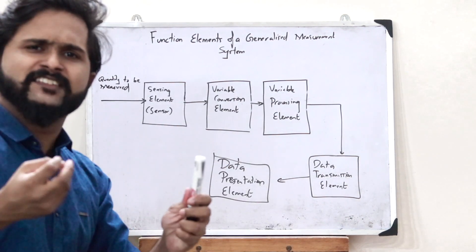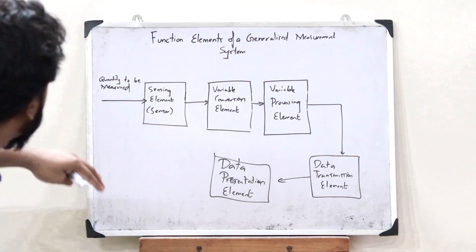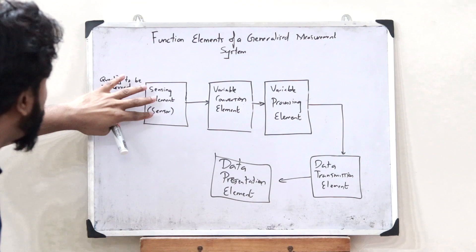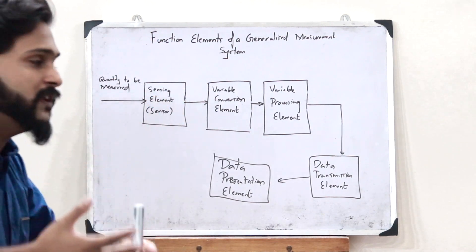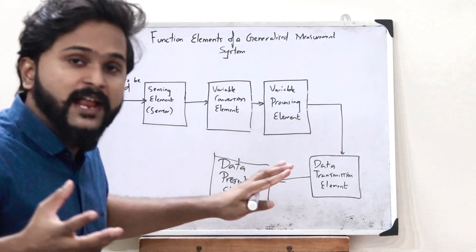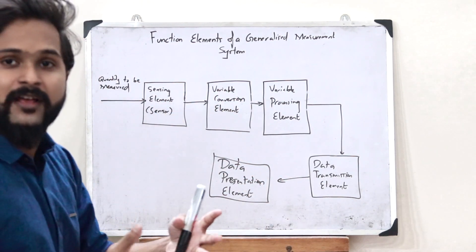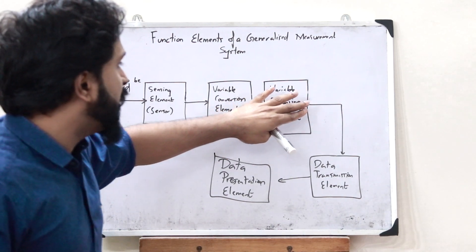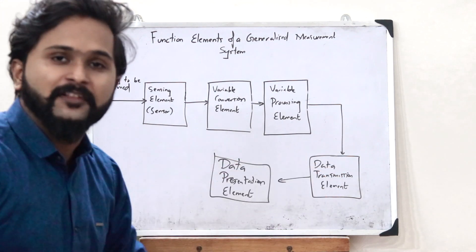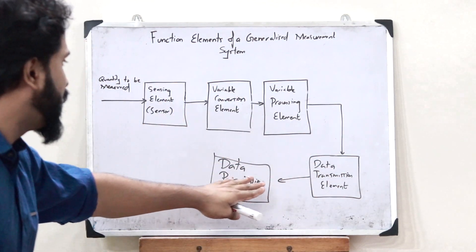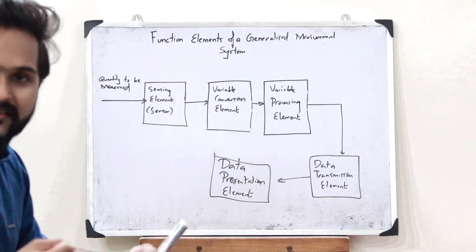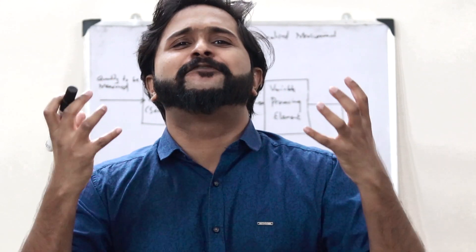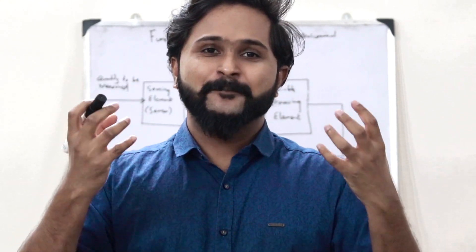As simple as that. It is something you can deduce with common sense. First, the quantity to be measured has to be sensed, so it is passed through a sensing element. After sensing, the variable has to be converted to a usable variable through a variable conversion element. After conversion, the converted variable must be processed through a variable processing element. After processing, the information is transmitted via a data transmission element, and finally displayed through a data presentation element. Those are the basic functional elements of a generalized measurement system.